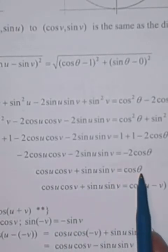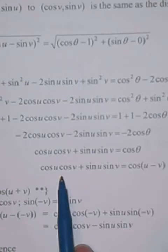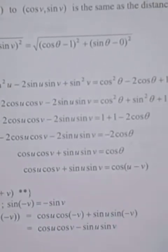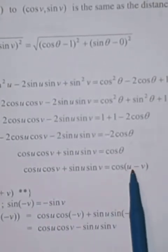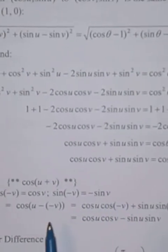We end up with cosine theta equals cosine u cosine v plus sine u sine v. Since theta was the angle u minus v, we have the formula: cosine of (u minus v) equals cosine u cosine v plus sine u sine v.